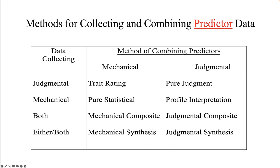These methods of collecting data are in the far left column: judgmental, mechanical, both, and either or both. Once the data is collected, the organization must decide how to combine this information to make a good hiring decision. Data can be combined in either a mechanical or a judgmental manner as well.